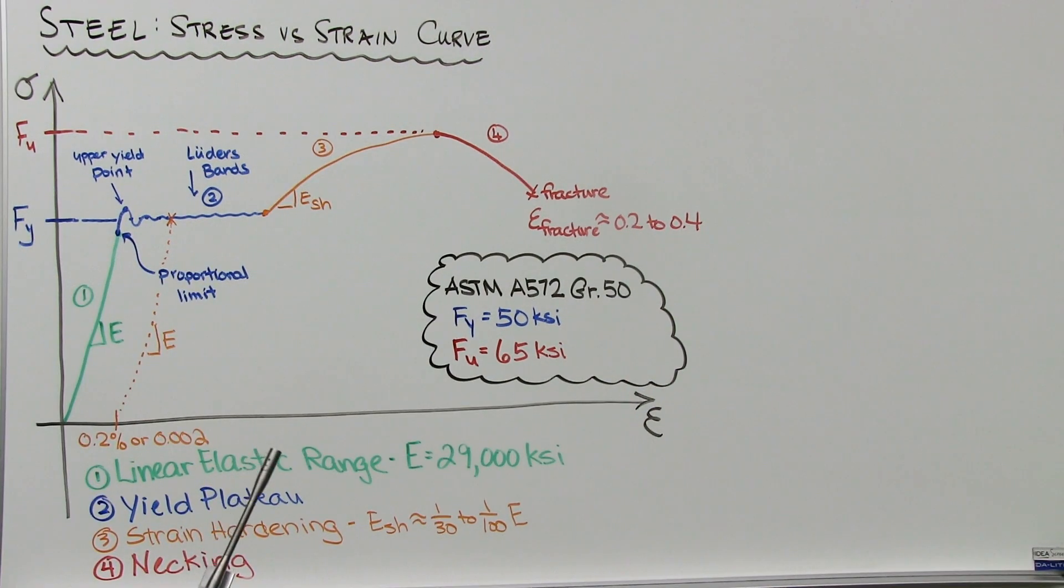Okay, so first we start by drawing a simple stress strain graph for ductile metal like steel. On the x-axis, we will draw strain or epsilon. And on the y-axis, we will plot stress or sigma.